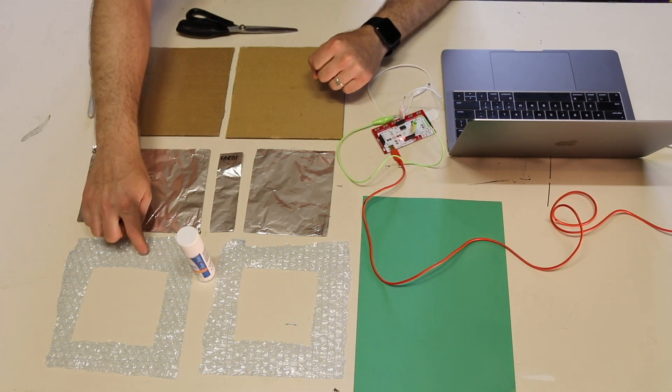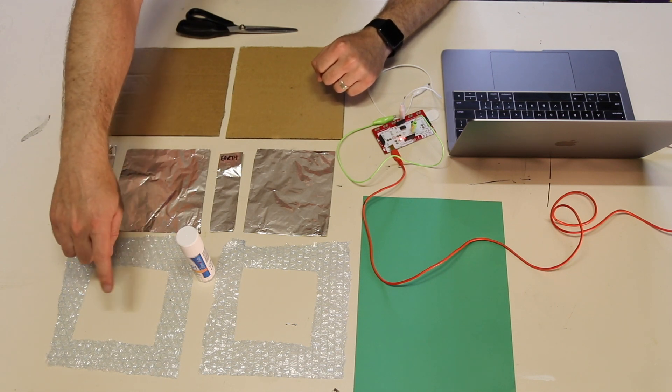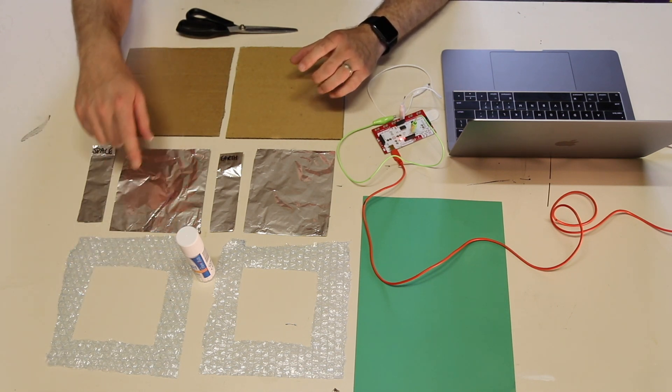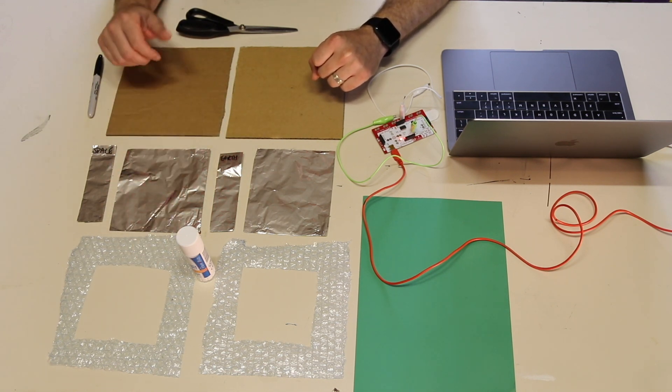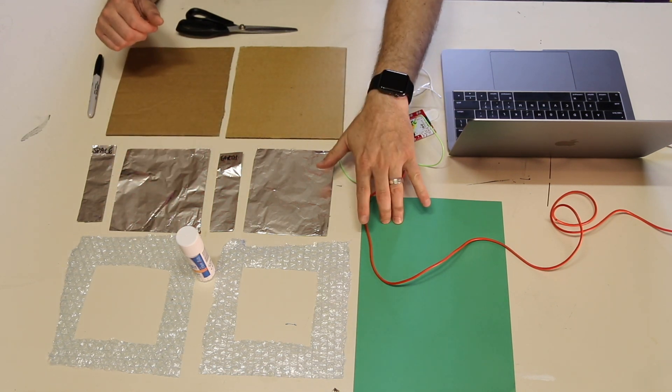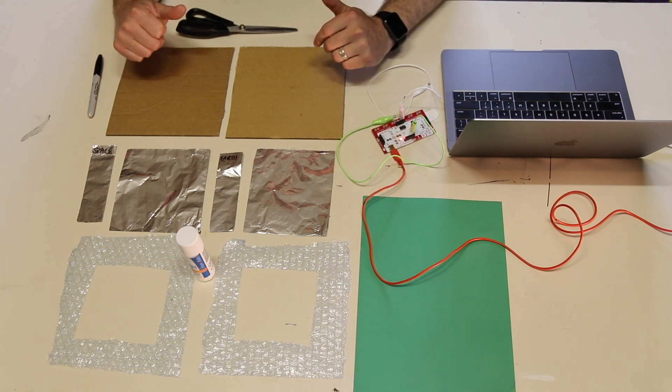I've got some bubble wrap and I've cut holes in them so that they can touch the foil. Depending on how sensitive you want your switch to be depends on how many pieces of bubble wrap you'll need, and just some colored card to make it look a little bit more attractive.